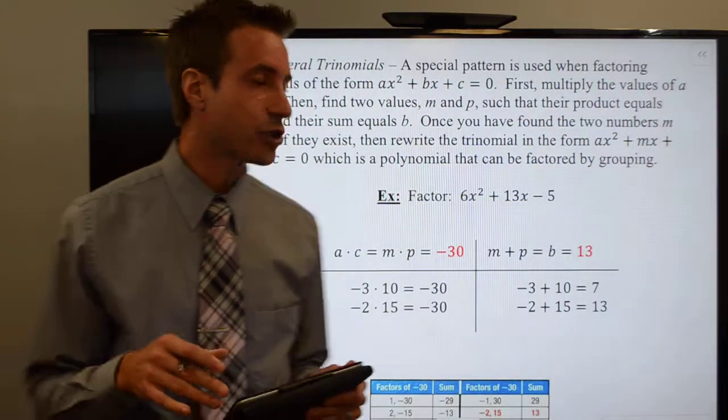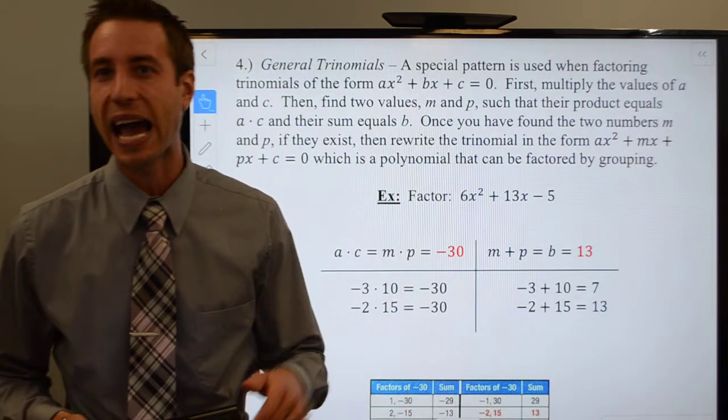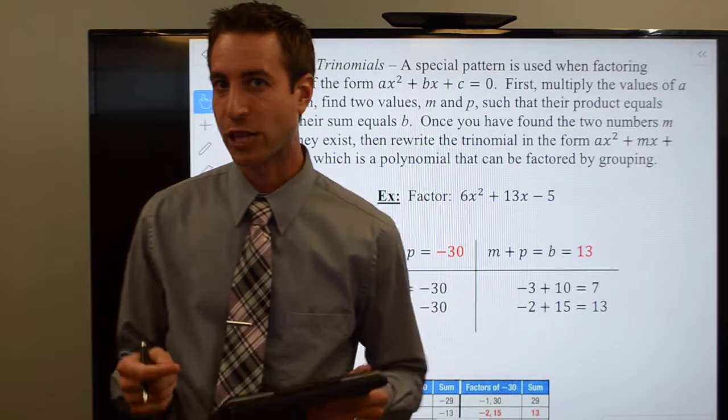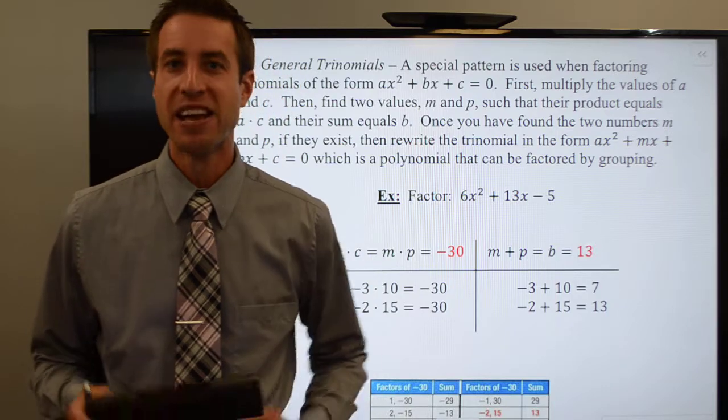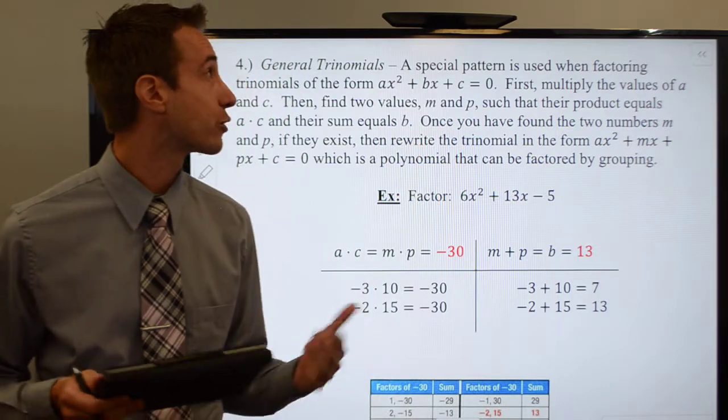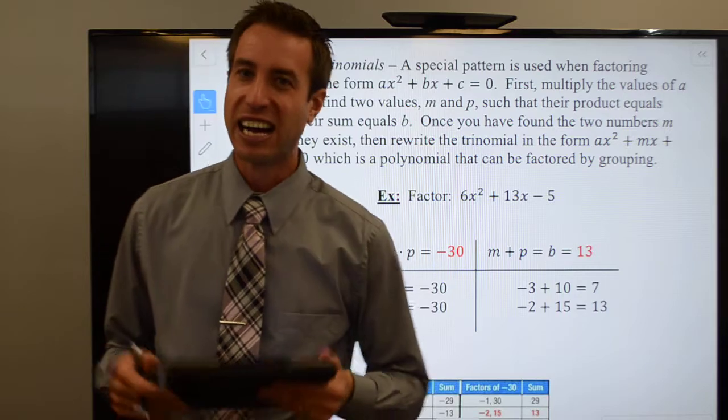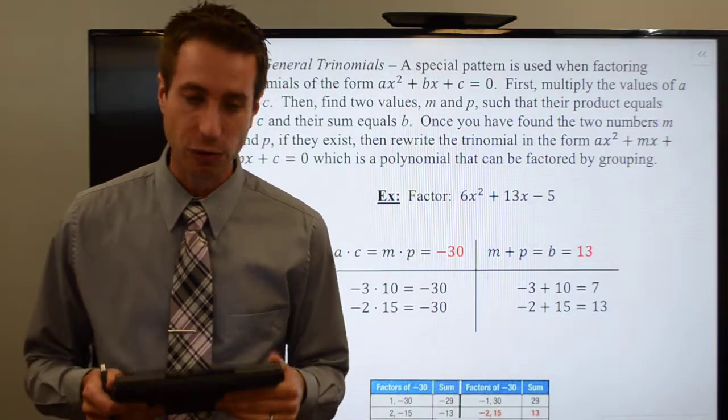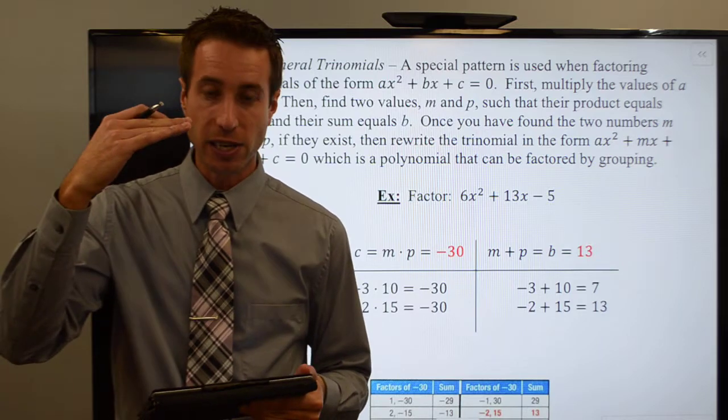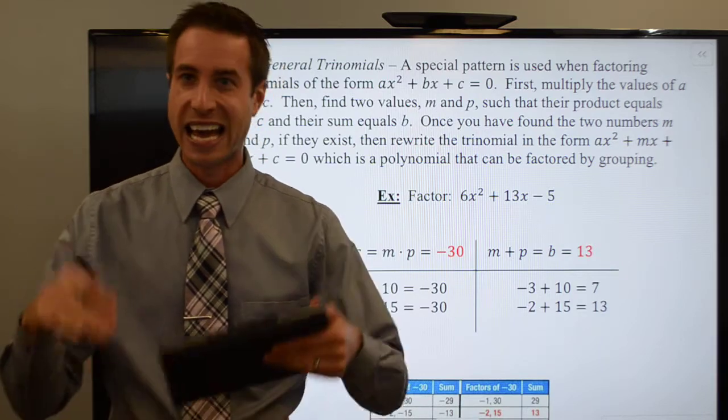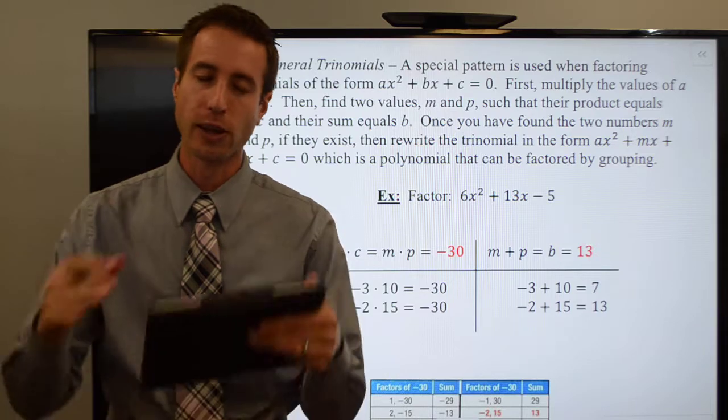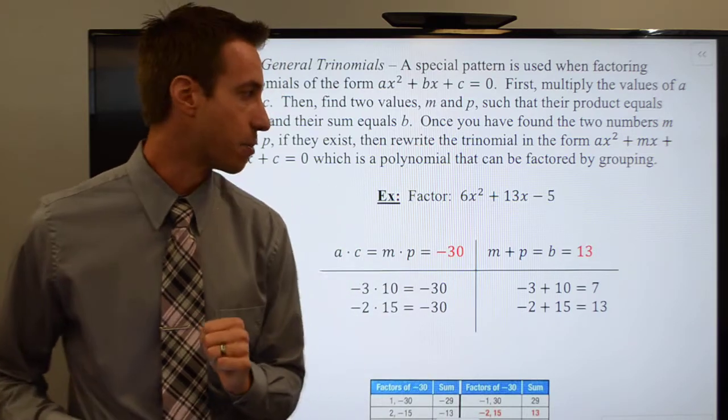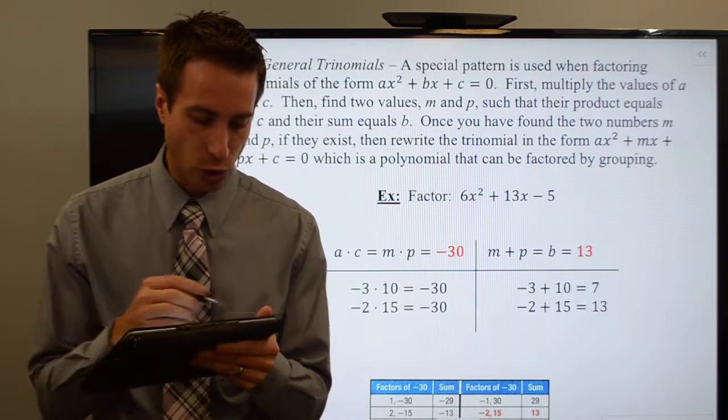All right guys, welcome to this page of the notes. We're now going to take a look at method number four for solving a quadratic equation using algebra. This is known as general factoring general trinomials. This is definitely the trickiest of the methods that we've looked at. So if GCF doesn't work and difference of squares doesn't work and it's not a perfect square trinomial, unfortunately you're left with no choice. You've got to go option number four.